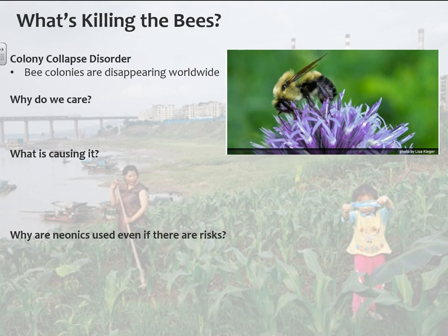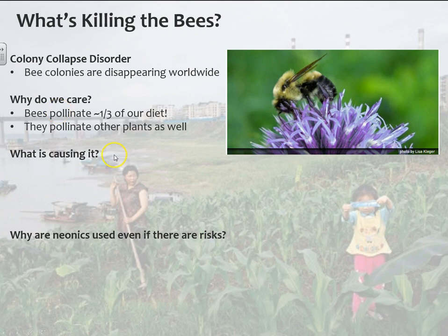Bees are annoying, right? Nobody likes bees. But one of the problems with bees disappearing is that bees pollinate about a third of our diet. Just from an anthropocentric perspective, bees are very important. They also pollinate other plants and help nature do its thing, but they're a very important part of what pollinates many of the plants that we eat.